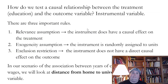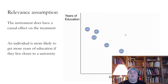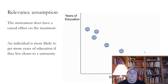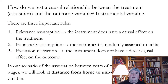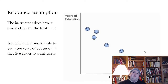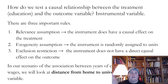The next assumption is the exogeneity assumption: the instrument is randomly assigned to units. If people choose how far they live from a university, that would be a problem, because that's effectively the same as choosing years of education. But if distance from home to university is randomly assigned, it satisfies the exogeneity assumption. To some extent, where you live is somewhat randomly assigned, at least earlier in your life — it's really where your parents live.